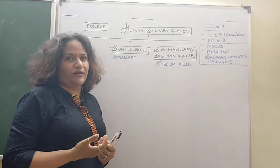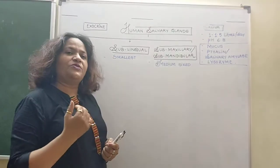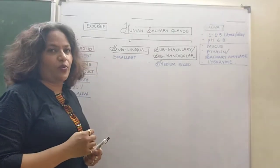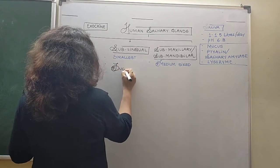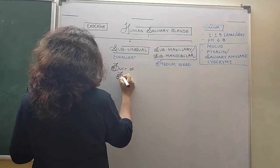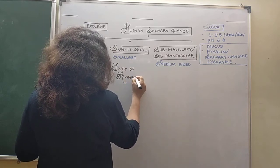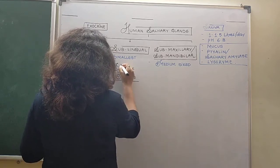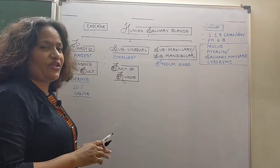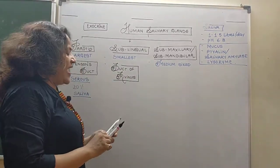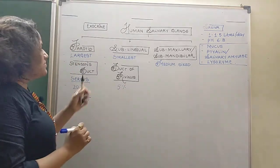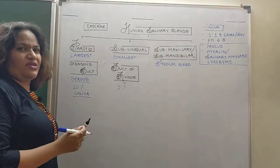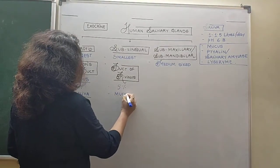The sublingual gland — 'sub' means below and 'lingua' means tongue — opens below the tongue. These are the smallest glands and they open below the tongue by means of the duct of Rivinus. The sublingual gland contributes just five percent to the saliva, and its secretion mainly consists of mucus, making it slimy.